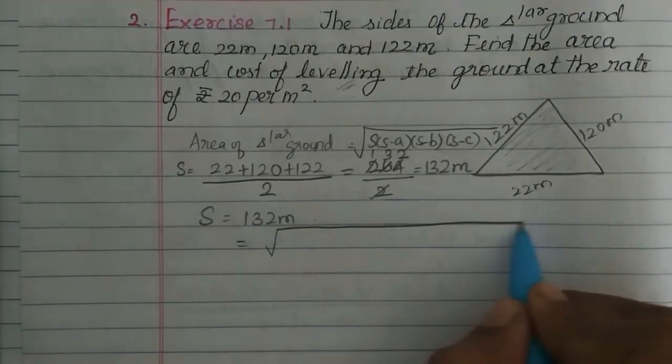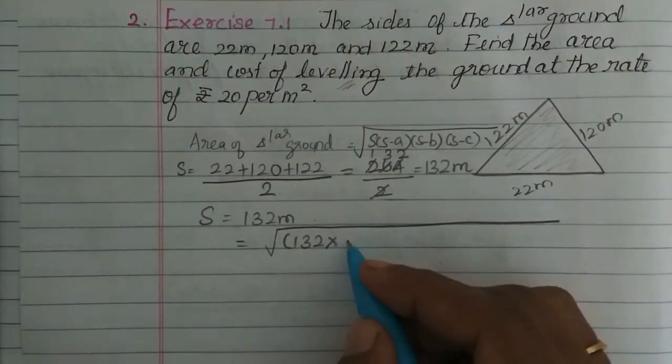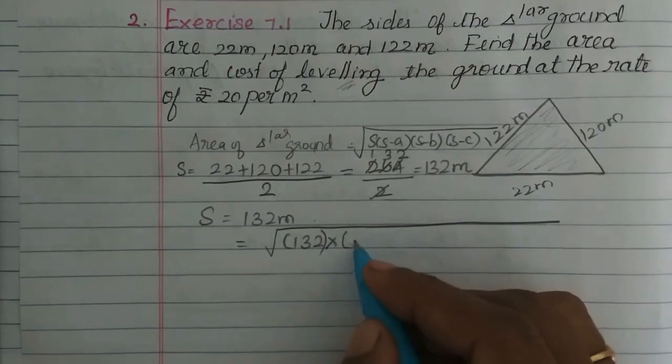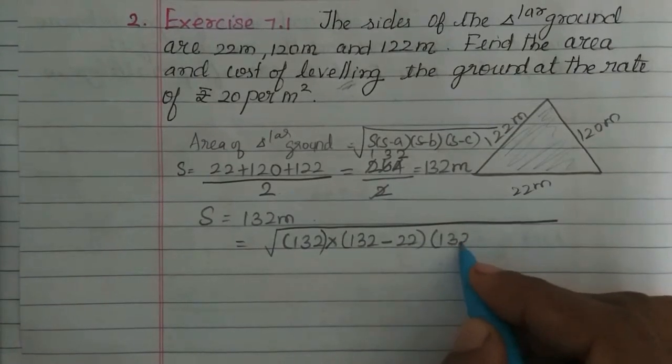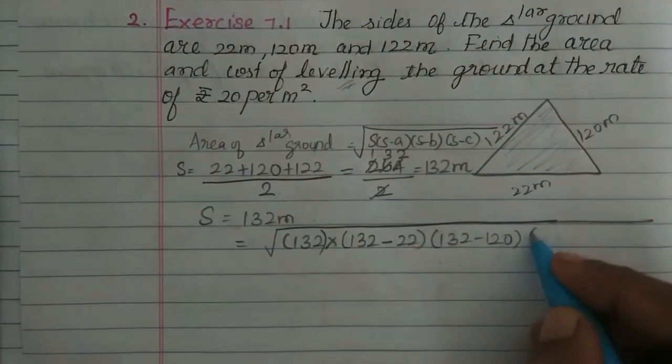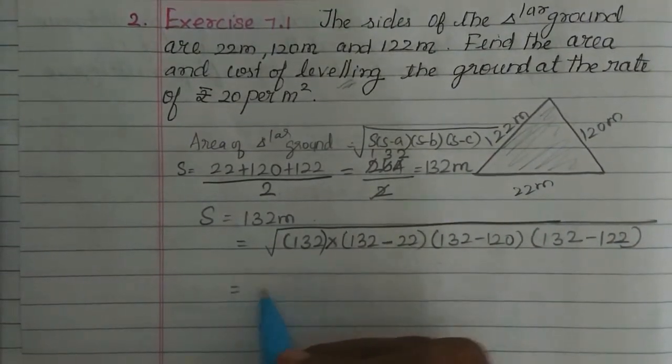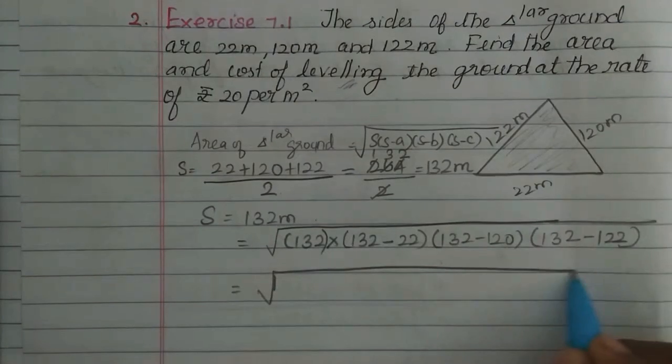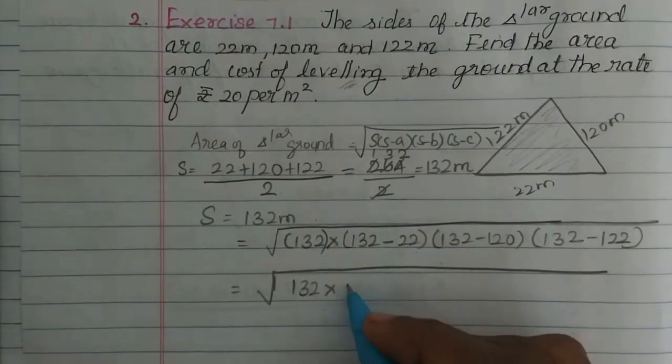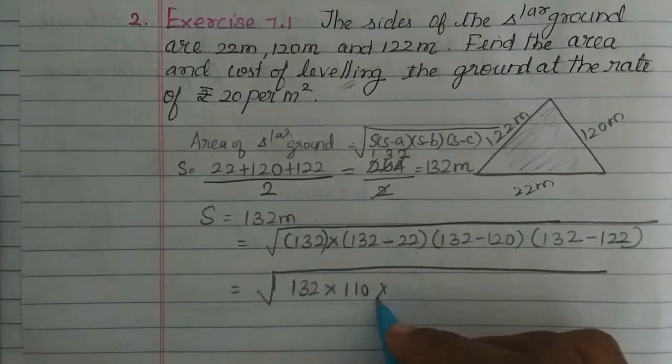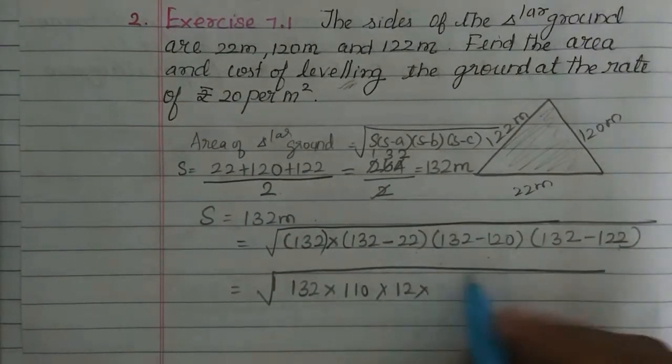Now the area equals root of 132(132-22)(132-120)(132-122), which is root of 132 × 110 × 12 × 10.